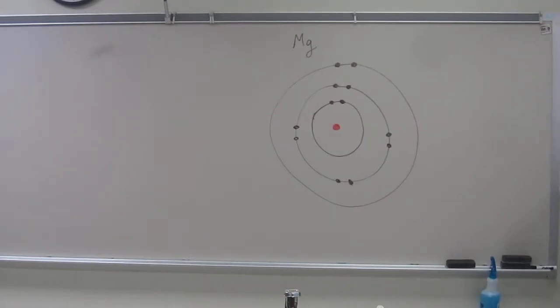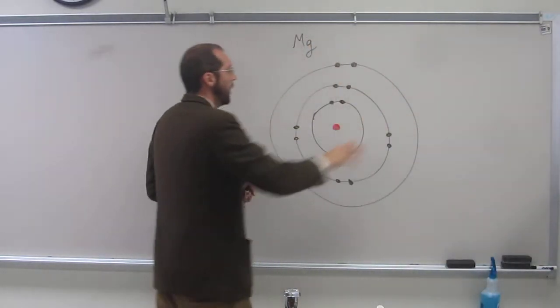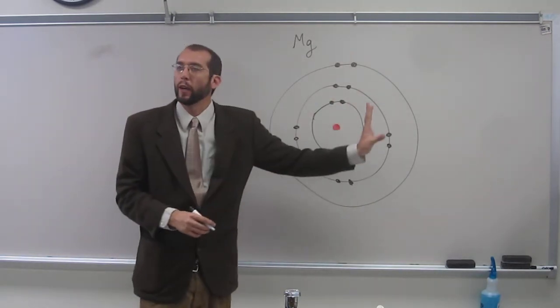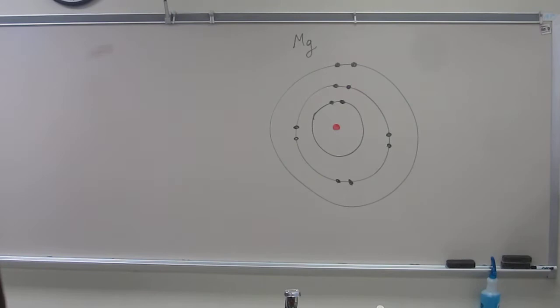Okay, so effectively, we have built magnesium in the planetary model of an atom, showing its inner shells and its valence shell, and all of its electrons associated.